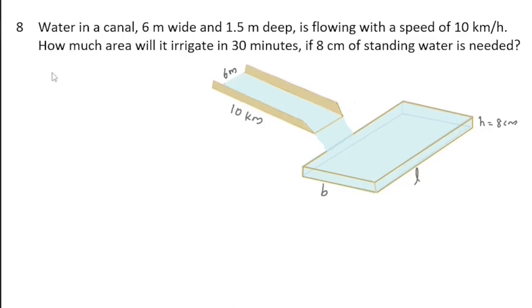Dear students, welcome. This is question number 8, exercise 13.3. Water in a canal 6 meters wide and 1.5 meters deep is flowing with a speed of 10 kilometers per hour. How much area will it irrigate in 30 minutes if 8 centimeters of standing water is needed?